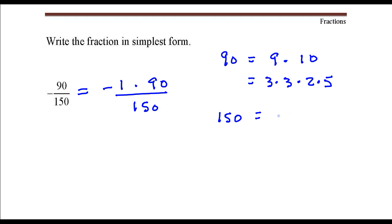150, that's 15 times 10, but 15 is 3 times 5, and 10 is 2 times 5. That's the prime factorization of 150.